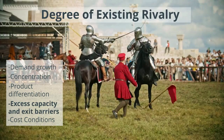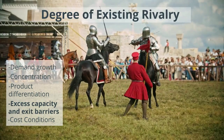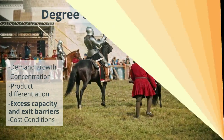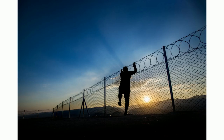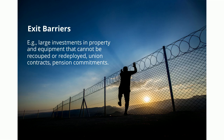Now let's talk about excess capacity and exit barriers. Sometimes industries end up with excess capacity because demand has gone into decline or because firms built production capacity too quickly. This puts heavy pressure on prices, and firms might want to shut down some of that capacity, but sometimes they face large exit barriers like investments that can't be recouped, union contracts, or pension commitments.